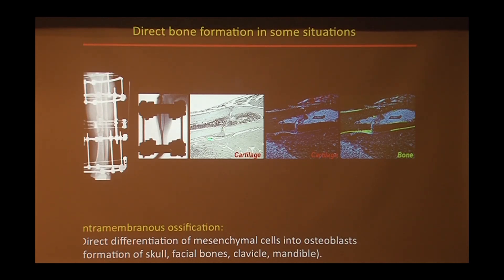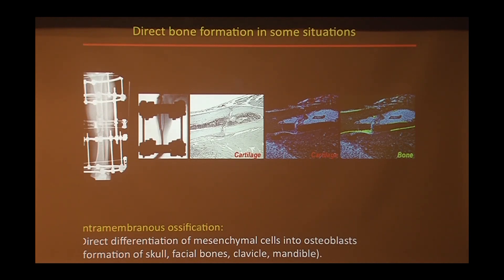Here we don't see any of the red staining from the previous picture. This is showing that even at a gene level we don't see any cartilage cells — instead we only see a bone response. This healing is called intramembranous healing, or direct bone formation.